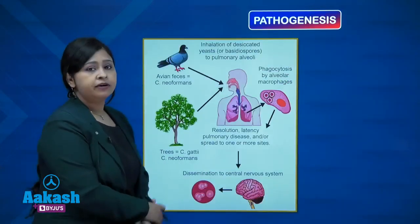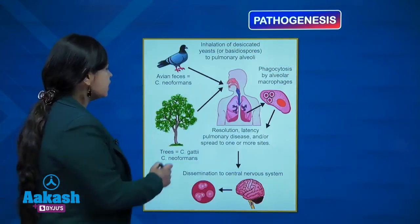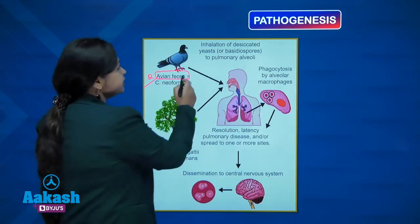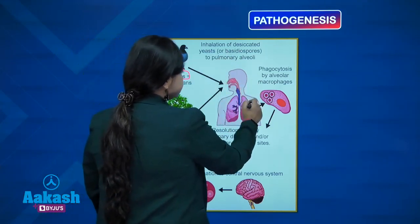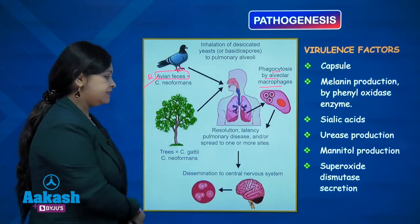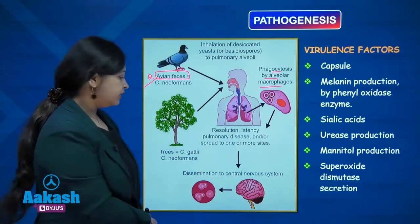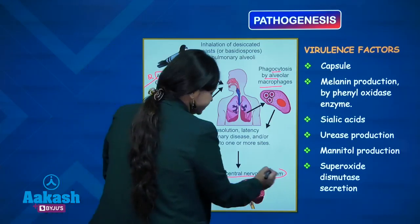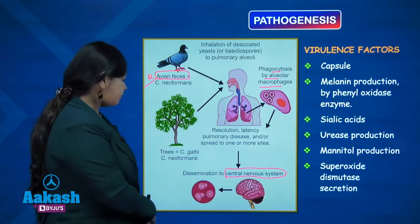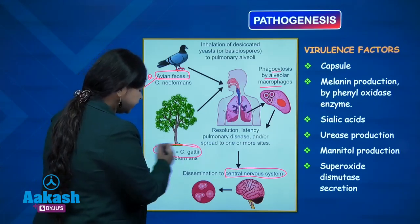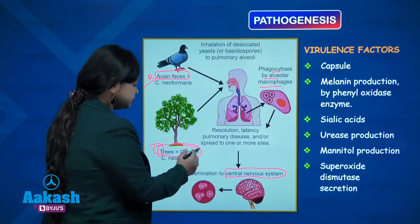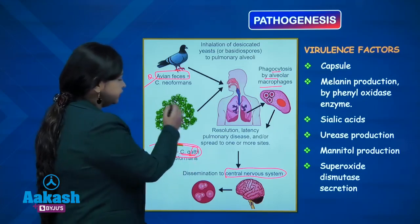Coming to the pathogenesis of cryptococcosis: the most common source of infection is avian feces or pigeon droppings, from which desiccated yeast is inhaled, enters the lung, and is phagocytosed by alveolar macrophages. Either there is resolution or latency, and when the immune status goes down, dissemination occurs. The most common site of dissemination is the central nervous system, and cryptococcal meningitis is the commonest manifestation in HIV positive patients. You should also remember that the eucalyptus tree is a reservoir of Cryptococcus gattii — there is a 'T' in tree and two T's in gattii.